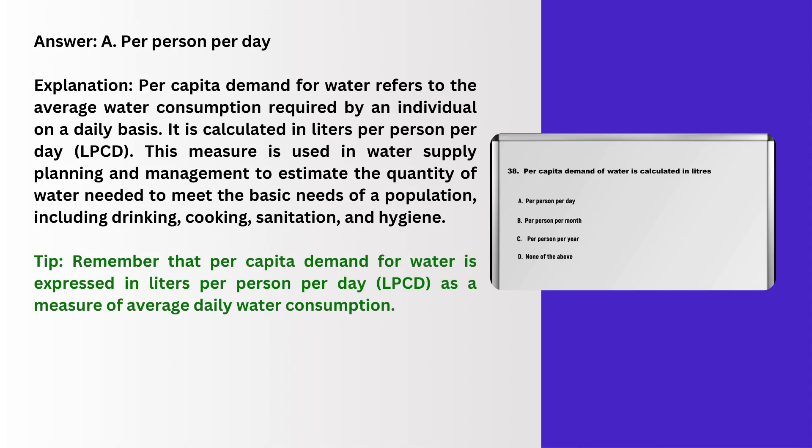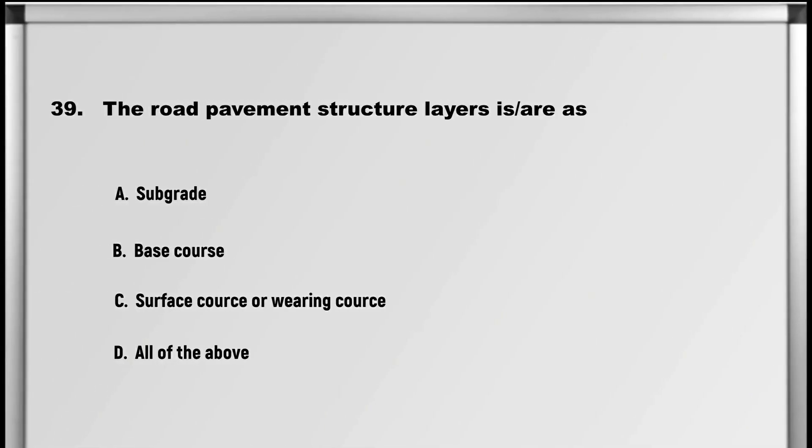Explanation: Per capita demand for water refers to the average water consumption required by an individual on a daily basis. It is calculated in liters per person per day (LPCD). This measure is used in water supply planning and management to estimate the quantity of water needed to meet the basic needs of a population, including drinking, cooking, sanitation, and hygiene. Tip: per capita demand for water is expressed in liters per person per day (LPCD) as a measure of average daily water consumption.